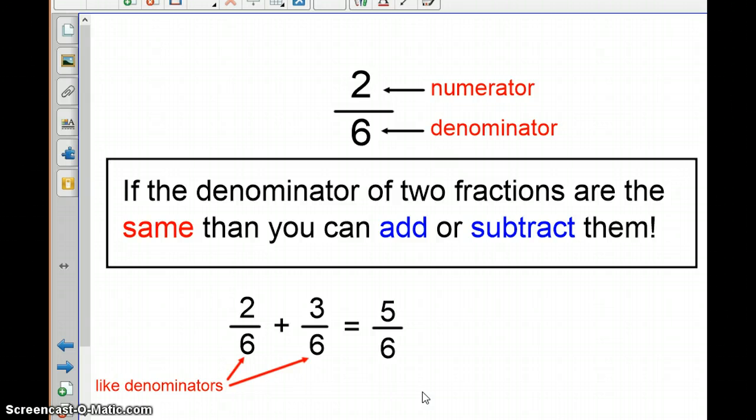So if the denominators are the same, you can just go ahead and add or subtract the numerator, okay? So as long as the denominator is the same, you're going to keep the denominator the same. In your answer, it's going to also have that same denominator. So we can just go ahead and add the numerators. 2 plus 3 equals 5. So 2 sixths plus 3 sixths equals 5 sixths.